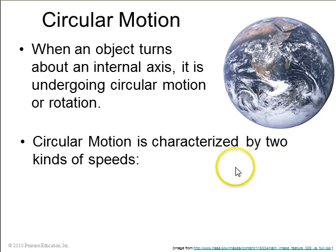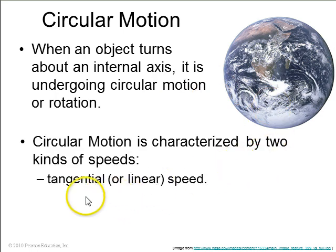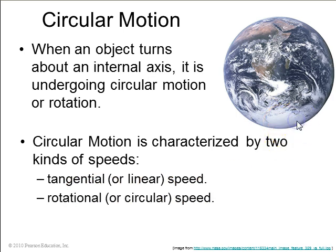So rotation is characterized by two kinds of speeds, the tangential or linear speed of the particles in the object, and the rotational speed of the whole object, sometimes called angular speed.